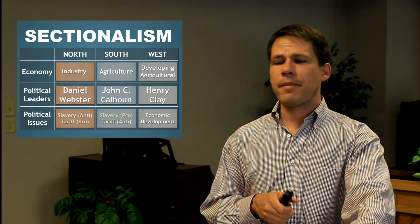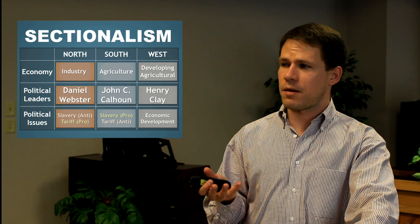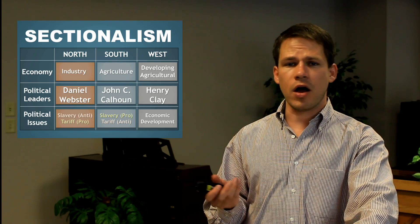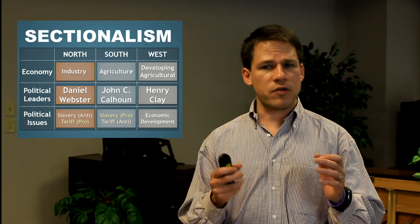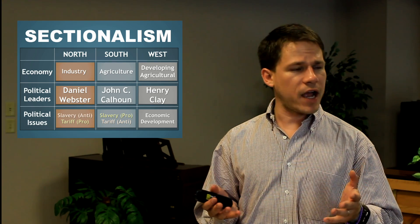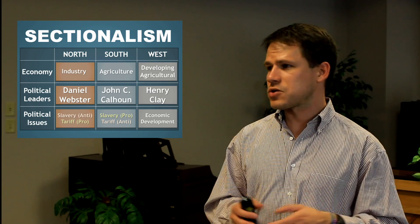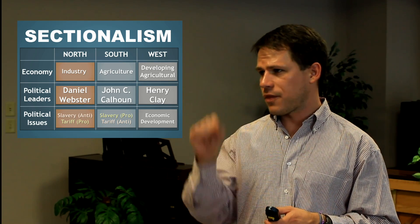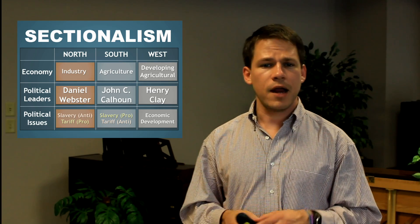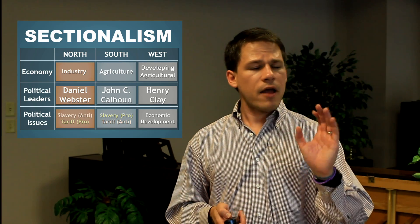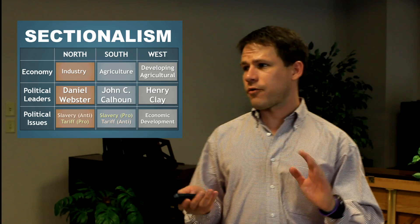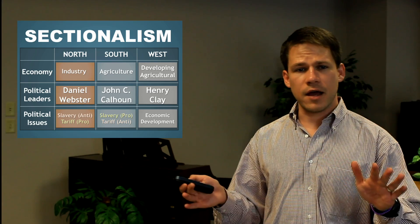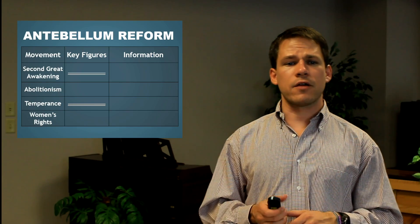The American System was about a Hamiltonian program of internal improvements, protective tariff, and a National Bank — usually presented in the NIP format. The South of course was going to be against the American System.